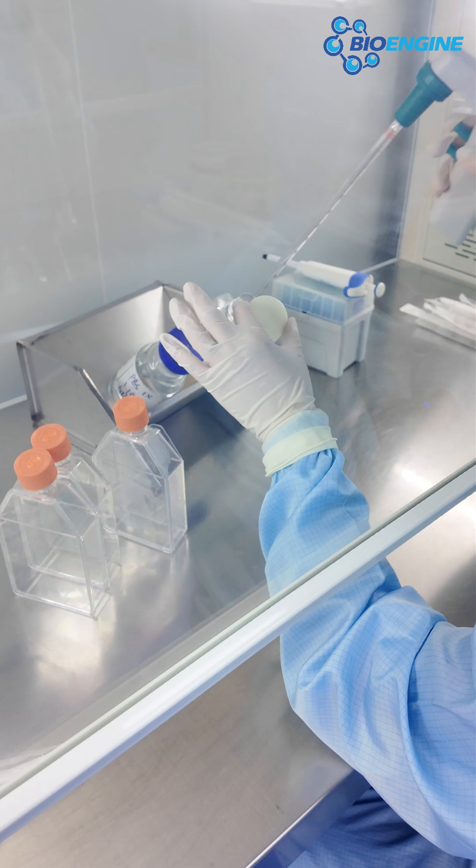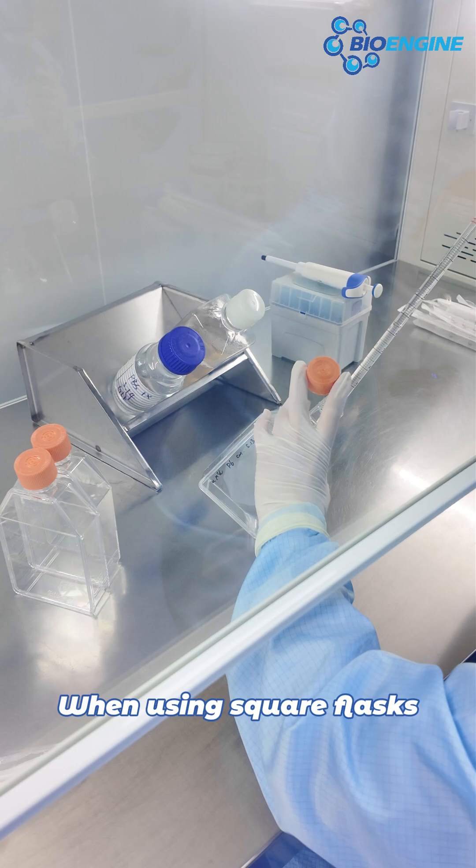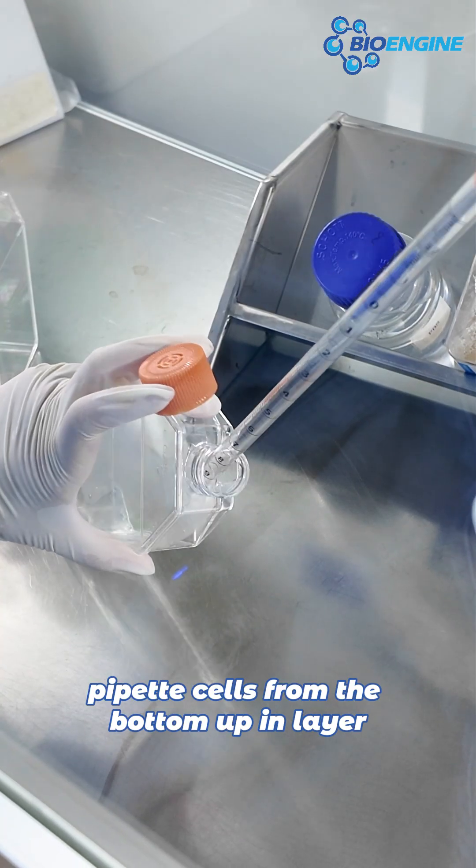After digestion, add fresh culture medium to re-suspend the cells. When using square flasks, pipette cells from the bottom up in layers.